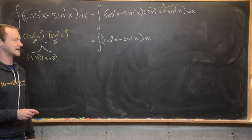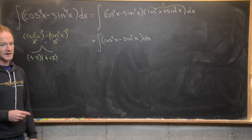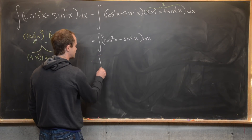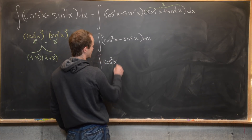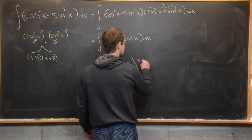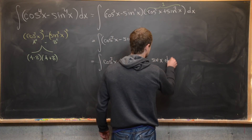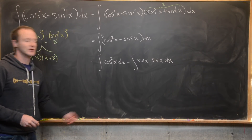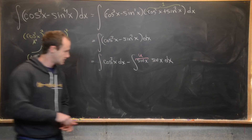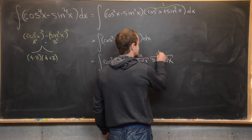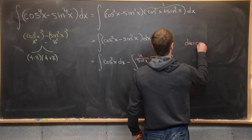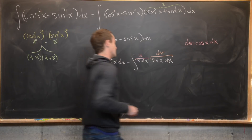There are a bunch of ways to calculate this — you could use a double angle formula — but I want to do it with integration by parts. First I'll separate this into two integrals: the integral of cosine squared x dx, minus the integral of sine squared x dx. I'll write that sine squared as sine of x times sine of x dx to nicely set up integration by parts, taking u equal to sine x and dv equal to sine x dx.